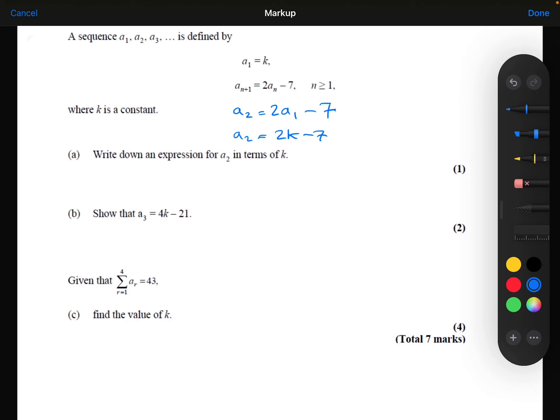Part B, we need to show that a₃ is equal to 4k minus 21. So again, using the rule that we're given, I could say that a₃ is equal to 2 times a₂ minus 7.